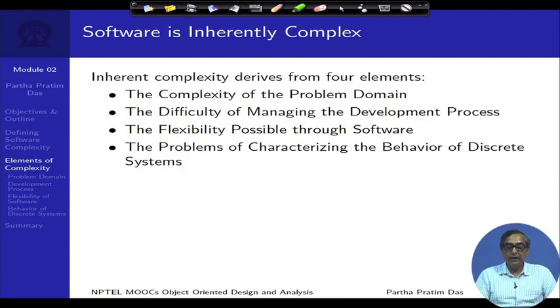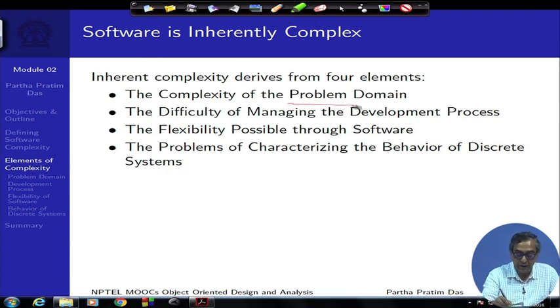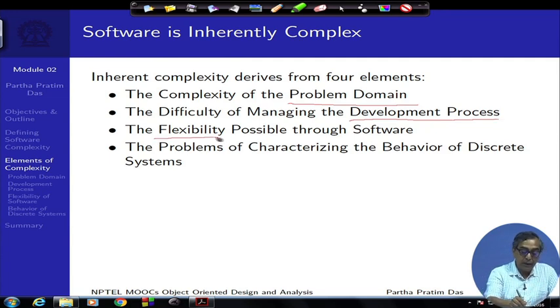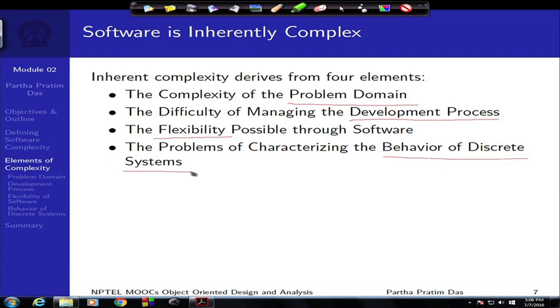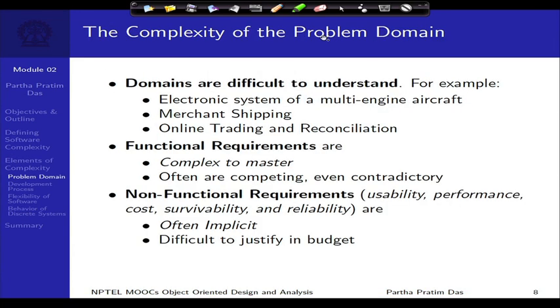Software is inherently complex, but we can look at this complexity in four different dimensions, commonly known as elements of software complexity: the complexity of the problem domain, the difficulty of managing development processes, the flexibility that software offers, and the behavior of discrete systems. We will take each of these elements and see what the complexity means in regard to them.